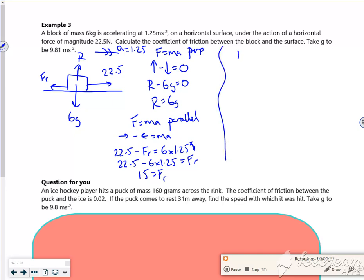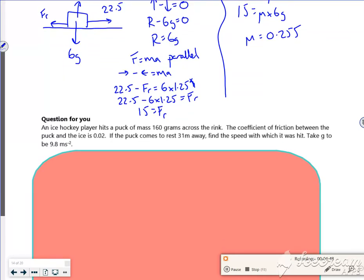Right, so then F max is MU R. I want to work out MU. So 15 is MU times 6G. If I divide through, MU is 0.255. MU is dimensionless as well, has no units.